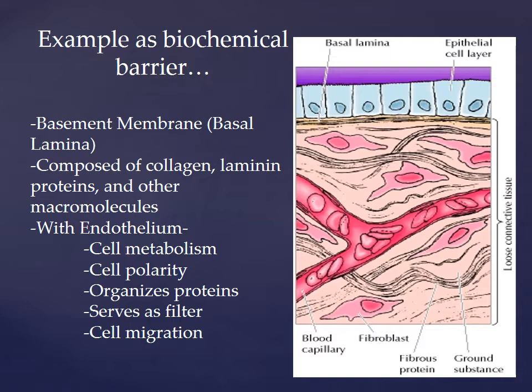One example of the extracellular matrix as a biochemical barrier is the basement membrane, otherwise known as the basolamina. The basolamina is composed of collagen and laminin proteins and various other macromolecules. The basolamina is related to the endothelium in that it influences cell metabolism, cell polarity, organizes proteins, and serves as a filter and a pathway for cell migration.